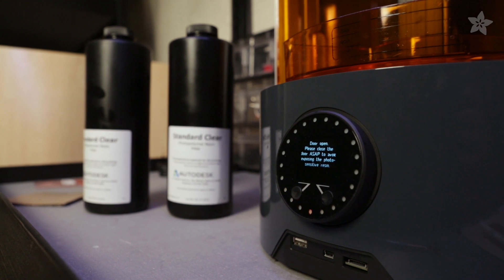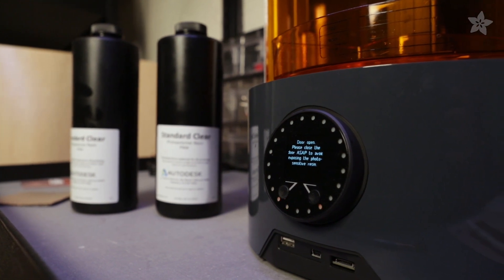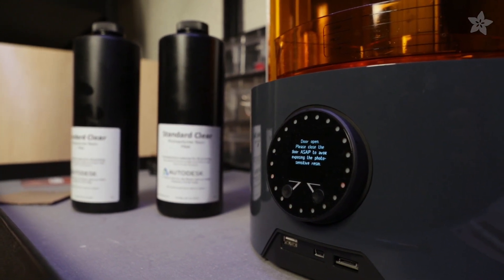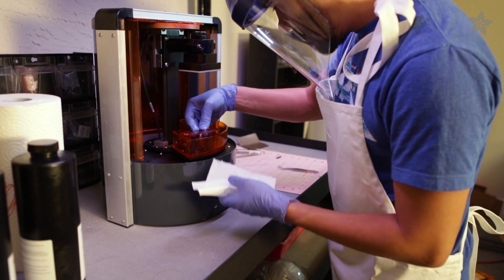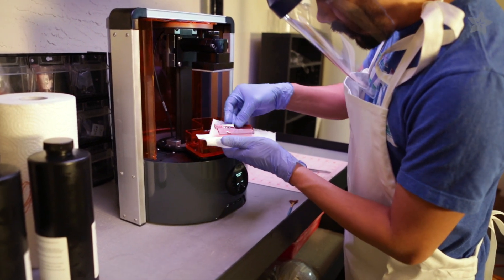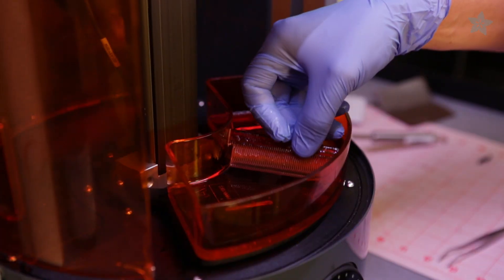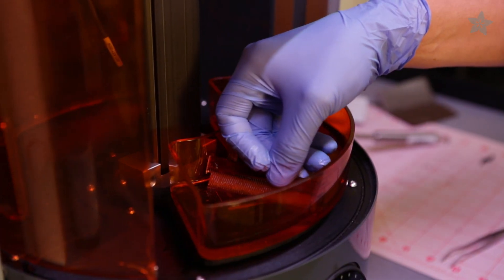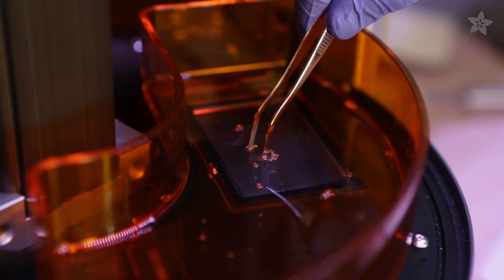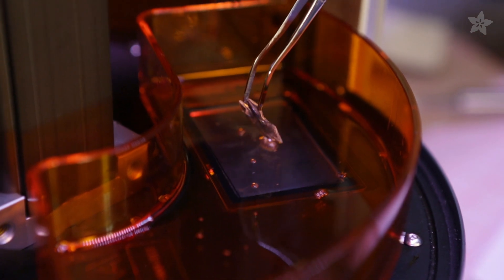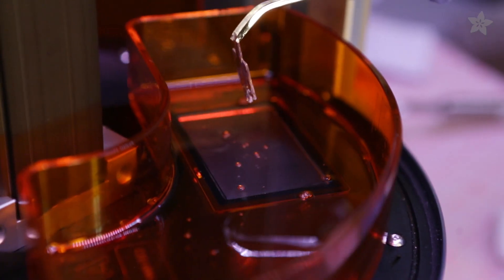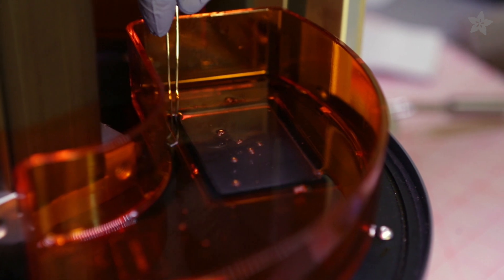Now let's take a look at maintenance. Keeping the resin tank clean is really important. When prints fail, material tends to build up and float around the tank. This can be difficult to spot, especially with clear resin. We're going to use a hair comb to filter out any pieces that are left behind. You can also use tweezers to fetch out any of the larger pieces. We recommend carefully swiping around the edges of the resin tray window and remove any buildup.